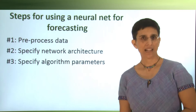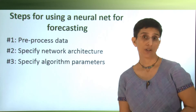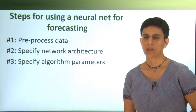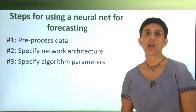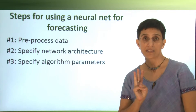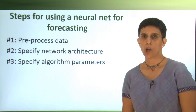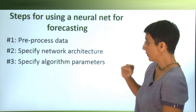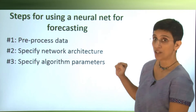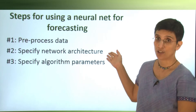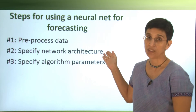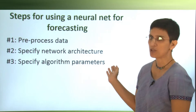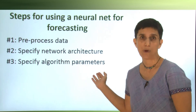Running a neural network is not completely automated, and the user has to make several choices. We're going to go through three steps: first, preprocessing the data; second, making choices about network architecture; and finally, deciding how to start the algorithm parameters.